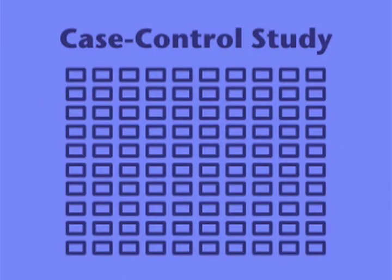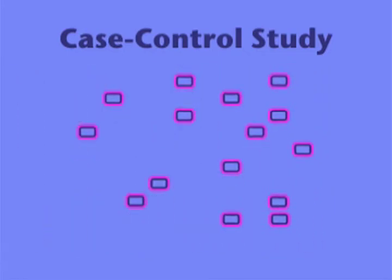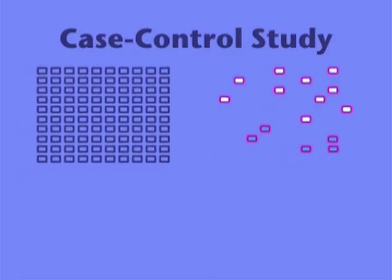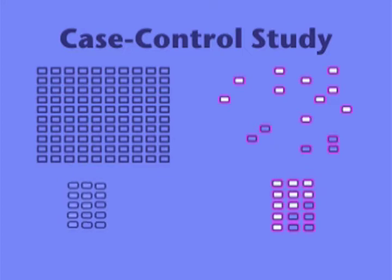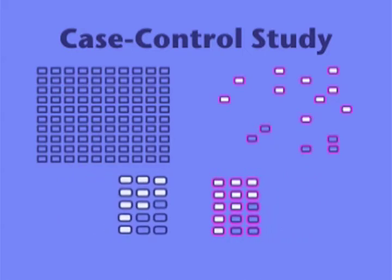Here, we start with the same study population we've already seen in the cohort study. In the corresponding case-control study, we first find all the subjects who had a GI bleed — these are the cases. If we then determine their exposure status, we'll find that 10 on top have taken aspirin and 5 on the bottom have not. However, we need a comparison group of subjects who have not had a GI bleed. In a case-control study, our comparison subjects are called controls. Here, we found the same number of controls as cases. You can also see that the same numbers of cases and controls used aspirin; therefore, aspirin must not have had any effect on the development of GI bleeding in this example.